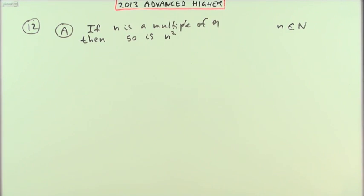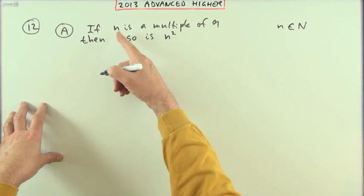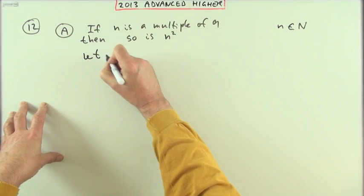First one, if n is a multiple of 9, then so is n squared. Well, let's say if n is a multiple of 9, then we can start off with this. Let n be, if it's a multiple of 9, 9 times some number k.